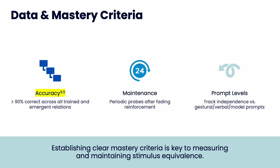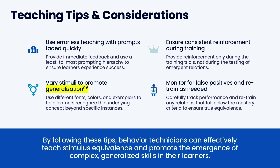Emergent relations won't happen unless you have really good accuracy on the first two relations you're teaching. You want 90% correct, and you need mastery — not 90% one time over 10 trials, but 90% over three sessions. Probe for maintenance; that's really important. Also track prompting — if you're prompting too much, emergent relations don't happen. Use errorless teaching and fade prompts quickly so you get independence as soon as possible. For generalization, vary the stimuli: different fonts, colors, and examples so the learner recognizes the underlying concepts.